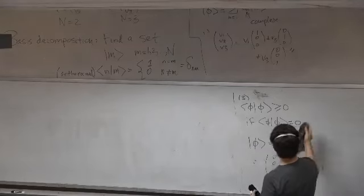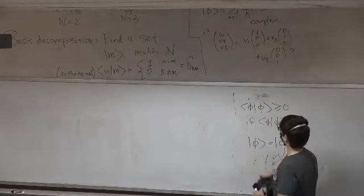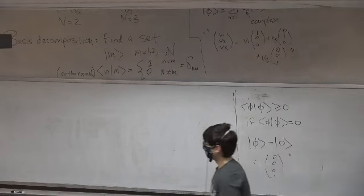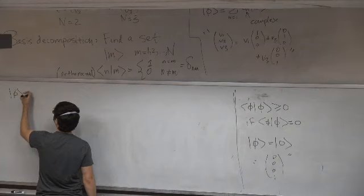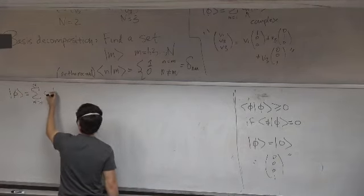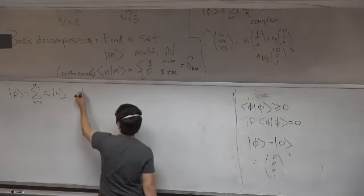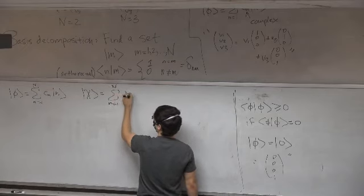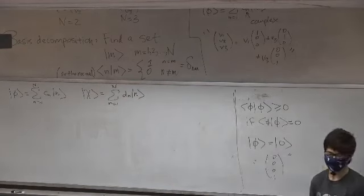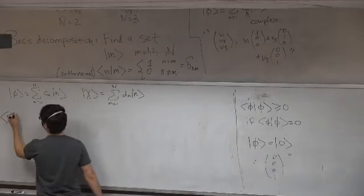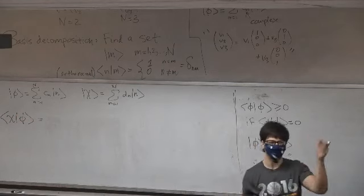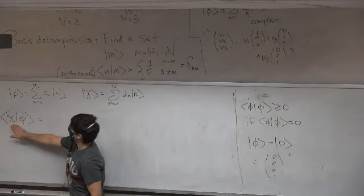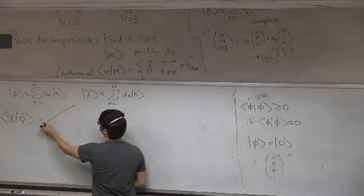We're going to use this now to prove things. We can calculate an inner product: take some vector phi, decompose it with coefficients cₙ, take another vector chi, decompose that with different coefficients dₘ, and now take the inner product ⟨χ|φ⟩. Let me do this slowly, because it'll show you how all the different properties work together. This is a linear combination of basis vectors, so we'll use linearity of the inner product. For each term, we can pull out the constant dₙ, giving a sum over all M and N of the inner product between basis vectors M and N.